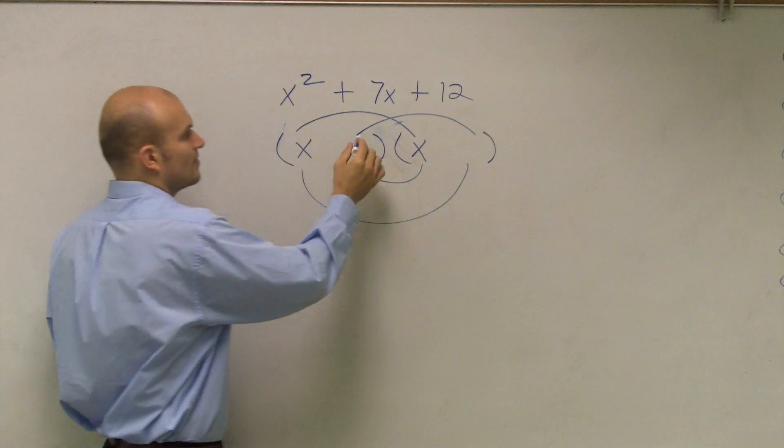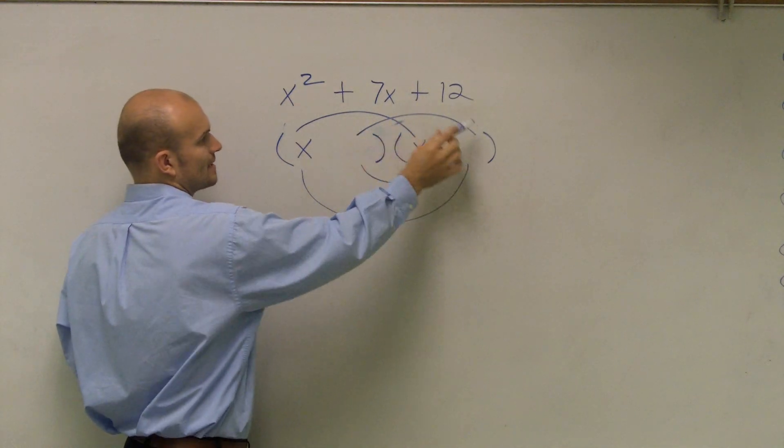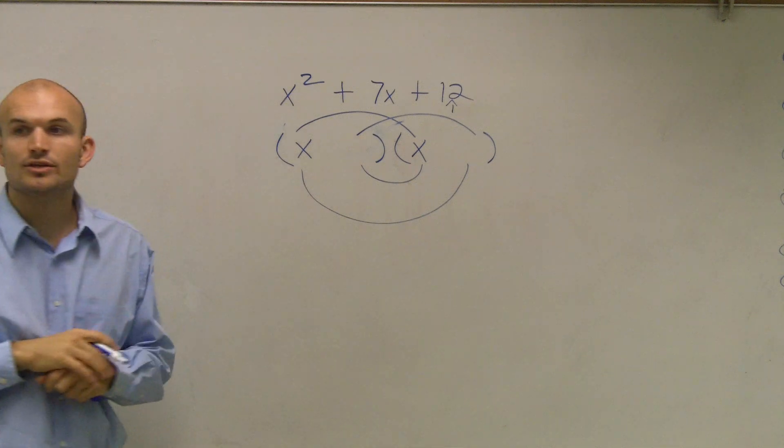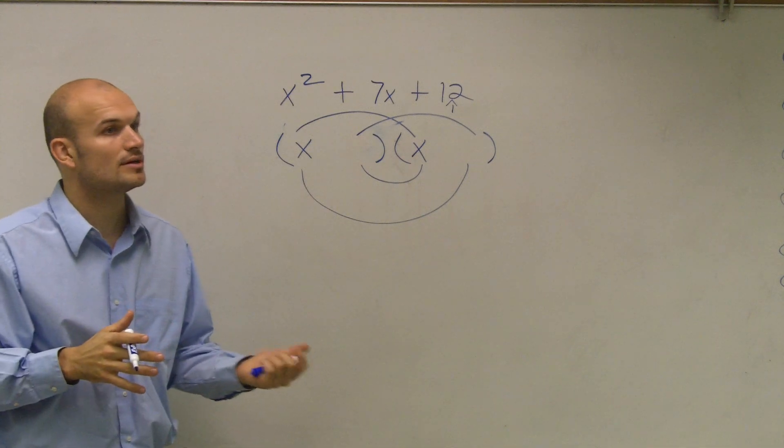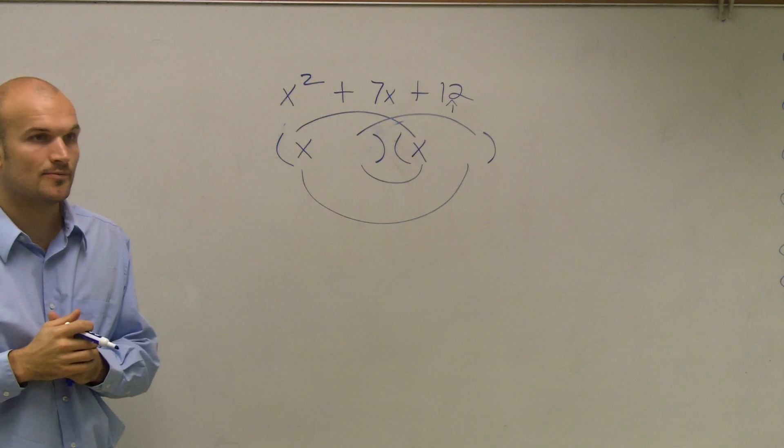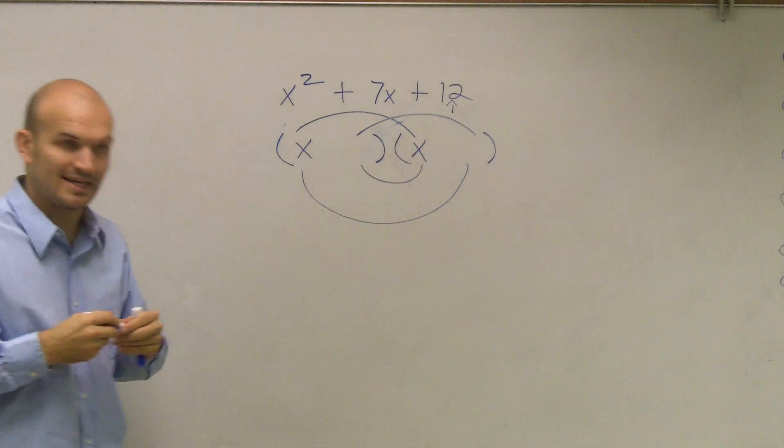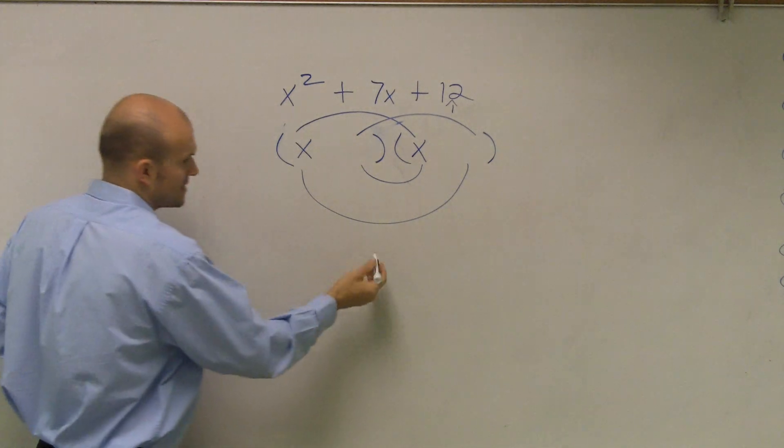So now, the next thing is, these two numbers, when I multiplied the last times the last, that always produced me my constant, or my number in my trinomial. So what I need to do is figure out what are all the numbers that multiply to give me 12. And I gave you guys a diagram to practice with this.